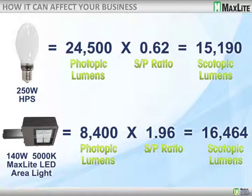This is how it can affect you. A 250-watt HPS lamp delivers 2,400 photopic lumens. Multiplying by the SP ratio, we get somewhere in the neighborhood of 15,000 scotopic lumens. Moving to an LED source — a 140-watt, 5,000 Kelvin product — it delivers about a third of the photopic lumens, but the SP ratio is over three times that of high-pressure sodium at 1.96, so the scotopic lumens delivered are greater than what the high-pressure sodium produced at a much higher wattage.